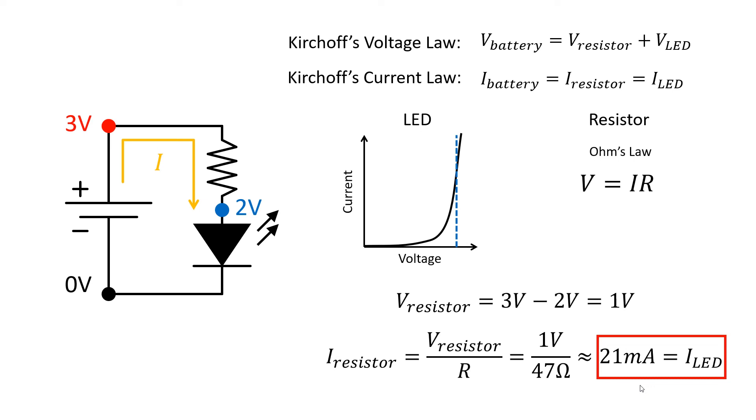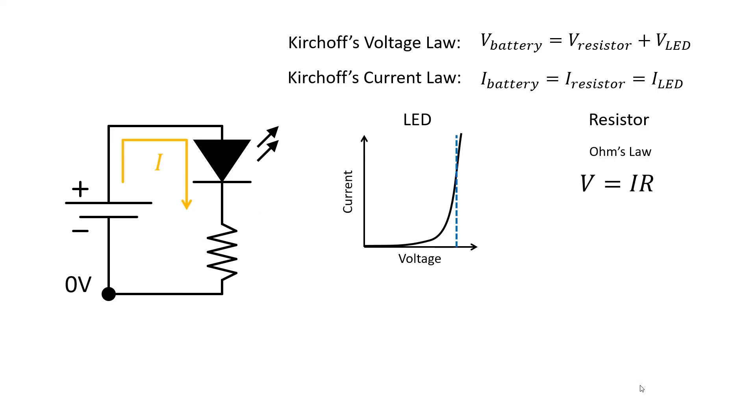It turns out that none of this math changes if we swap the LED and the resistor. So what happens if we put the LED first? We still have our ground point over here at zero volts, and we still have three volts on the other side of the battery. We know we have a two volt drop across the LED, so in this case we're going to do three volts minus two volts gives us one volt at this point.